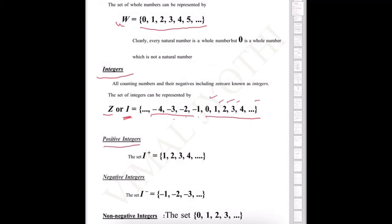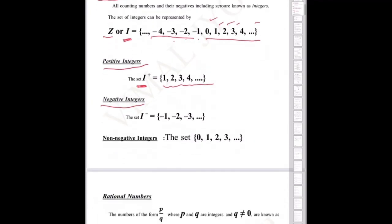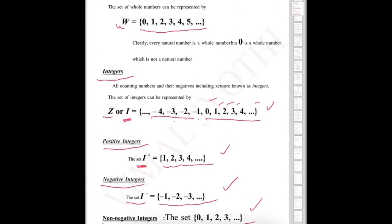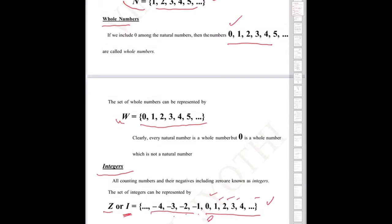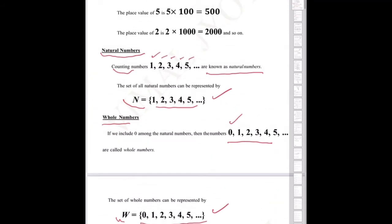Positive integers are denoted by I-positive: equals 1, 2, 3, 4, and so on. Negative integers are denoted by I-negative: that is minus 1, minus 2, minus 3, and so on. Non-negative integers are the set 0, 1, 2, 3, and so on. So, integers include negative integers and positive integers, combined with zero.